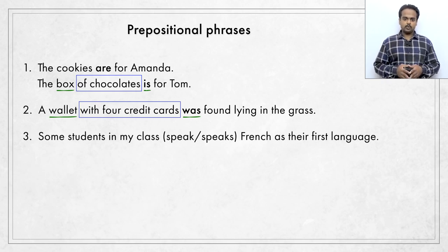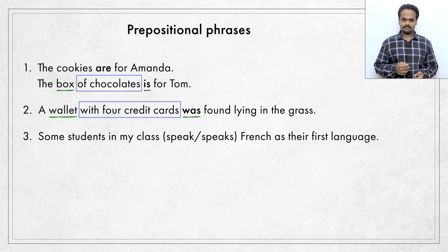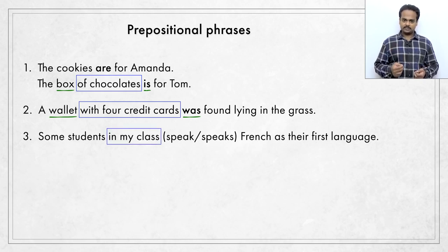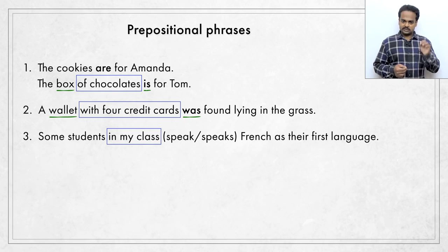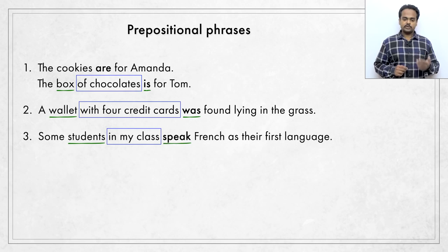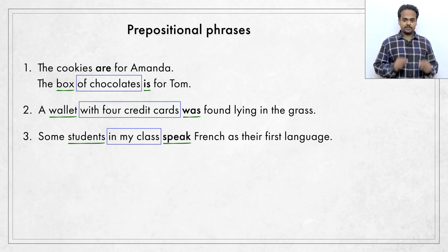Here's the next one. Some students in my class speak or speaks French as their first language. Well, what's the subject of this sentence? I see a preposition in, so I know that in my class is a prepositional phrase. It gives us information about the noun students. So, the subject here is students. This is a plural noun, so we need a plural verb, that is a verb without S added to the end. So, some students in my class speak French as their first language. Even though the noun class is right next to the verb, it's part of the prepositional phrase. The real subject is the plural word students.